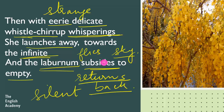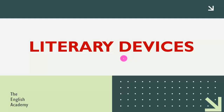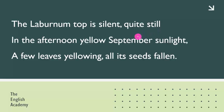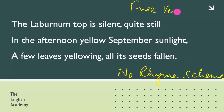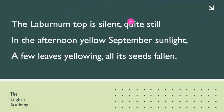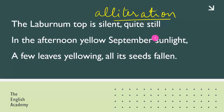With this we have read the poem and discussed it. Now let us see the literary devices used in the poem. The Laburnum Top is silent, quite still, in the afternoon yellow September sunlight, a few leaves yellowing, all its seeds fallen. First, there is no rhyme scheme in this poem — it is written in free verse, meaning no rhyming device is used. Another device is alliteration — the repetition of a consonant sound at the start of two or more consecutive words. Here, 'September sunlight' — both words start with the S sound. This is alliteration.